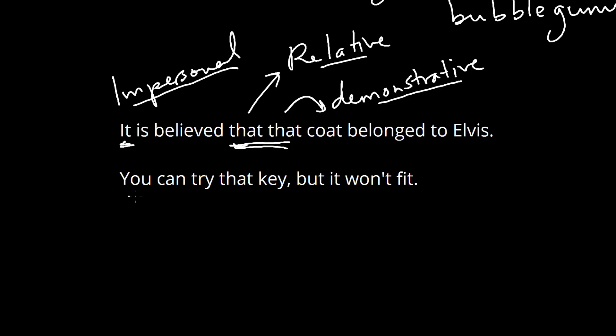And then the last example here, you can try that key. There's our that, but it won't fit. So in this case we have that again as demonstrative, and it is definitely pointing at something. So it's pointing at the key, whereas it is not impersonal. So we might think that it would be impersonal here, but it's not. And the reason for that is that it is pointing back to something. It's where it does have an antecedent, and that's where it is just a personal pronoun.